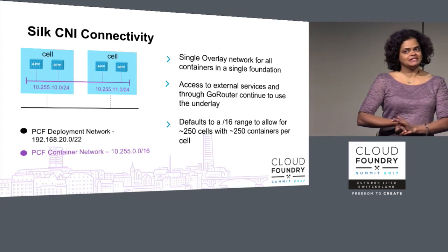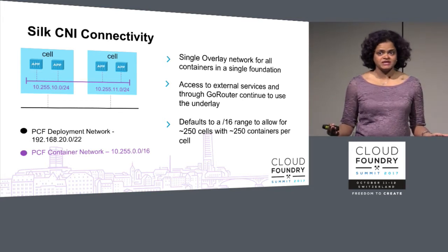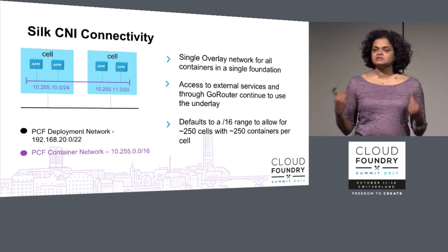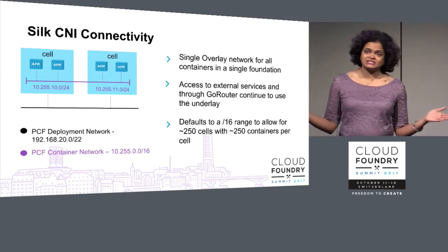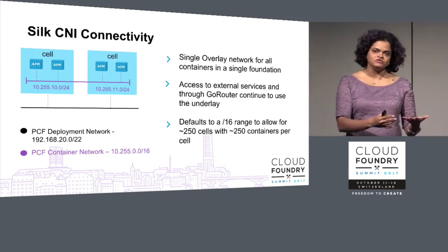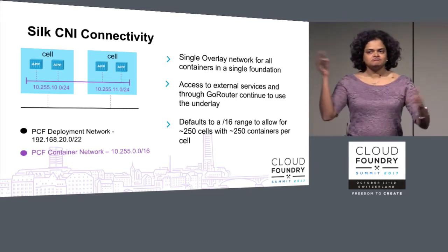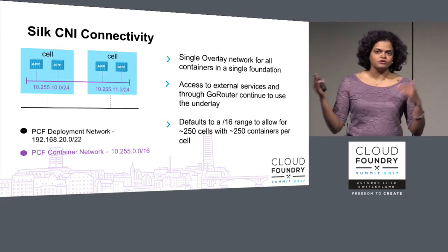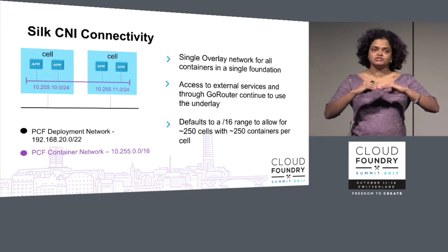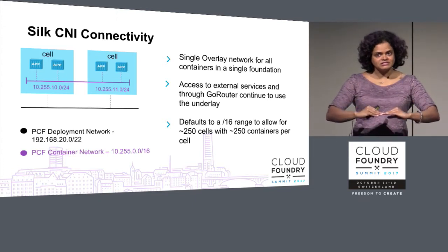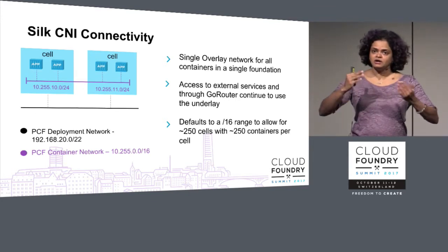For our batteries-included CNI plugin, we went with a very simple model. We use a VXLAN-based overlay network that gives every single container an IP address. It defaults to a /16 range; every cell gets a /24, which is about 250 containers per cell. You can tweak that for more or less scale. All container-to-container communication is on this overlay, and all container-to-external communication is on the underlay — there's no mixing of traffic between these two layers.